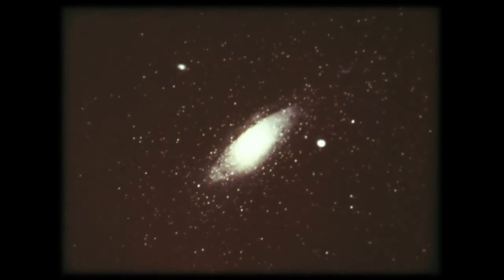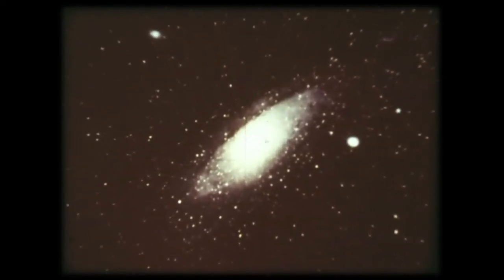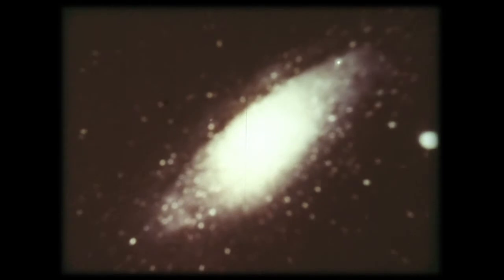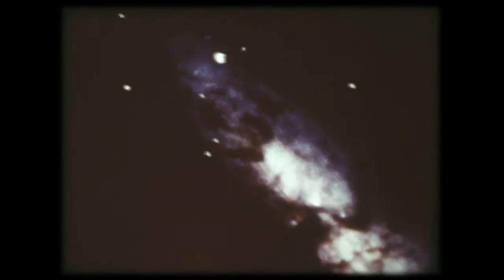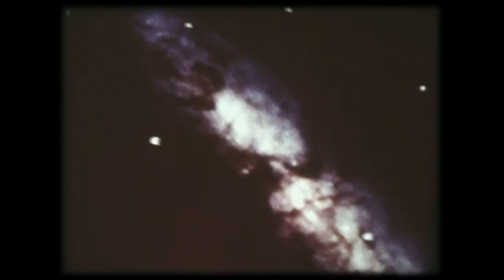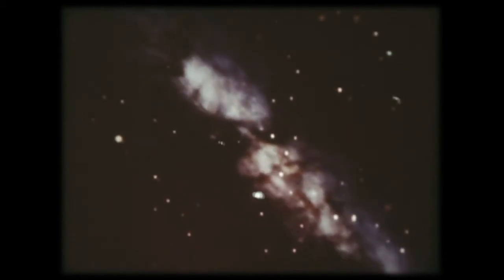The Andromeda galaxy is 12 quintillion miles from the Earth. The irregular galaxy in Ursa Major is 38 quintillion miles from the Earth. The galaxy in Sculptor is 43 quintillion miles from the Earth.